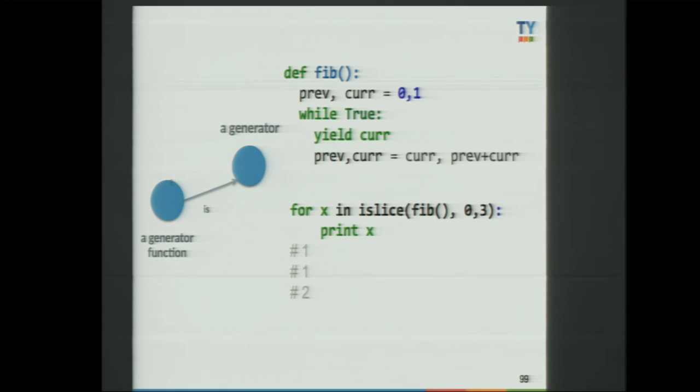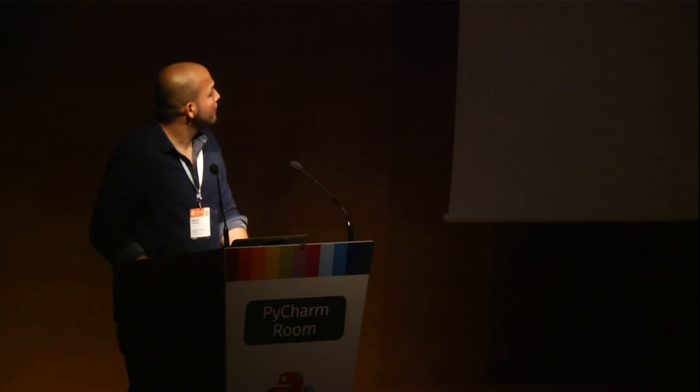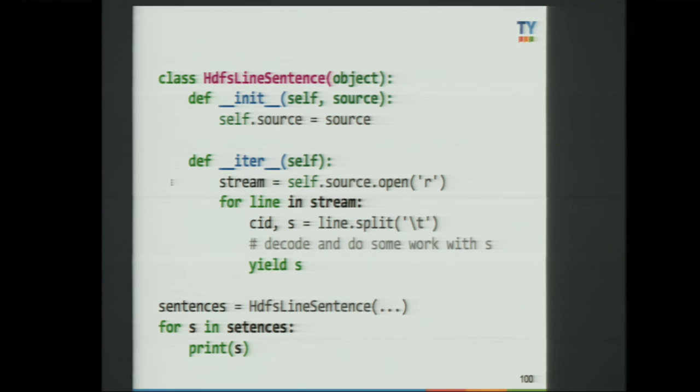When you call next() on a generator function, the code executes until the yield, which returns the value back to the program and continues only after next() is called again. In this example, I'm calculating the Fibonacci sequence, and I can just call next() repeatedly. Something to be aware of: this is an infinite generator — you see the while True — it won't stop. You can use itertools functions to obtain just a subset, and in this case I get the first three using islice().